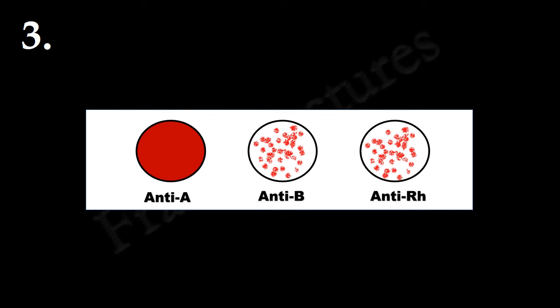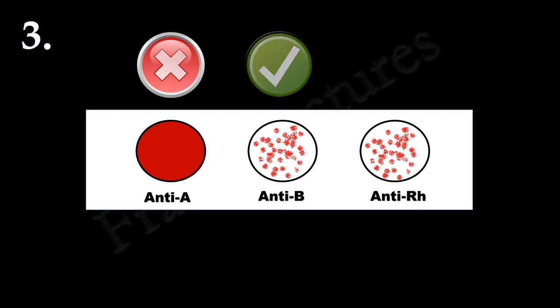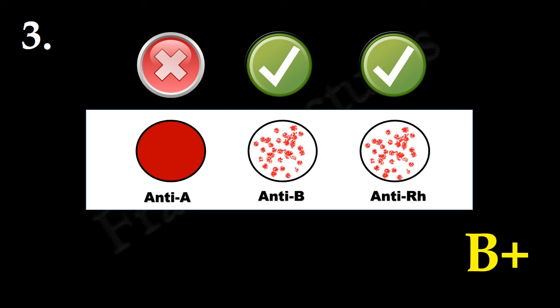Here, no agglutination in the anti-A circle, so antigen A is absent. B and RH antigens are present since agglutination is observed in the anti-B and anti-RH circles. So blood group will be B positive.